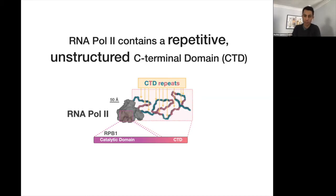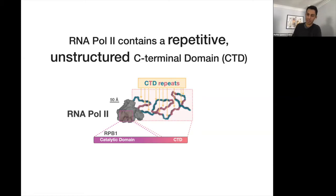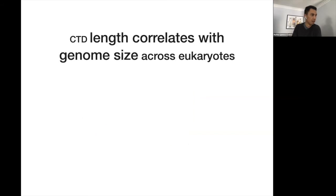In particular, it's made of what are known as CTD repeats — segments of seven amino acids that repeat over and over. An additional interesting feature about this domain is that the number of repeats, or its length, is correlated with genome size.